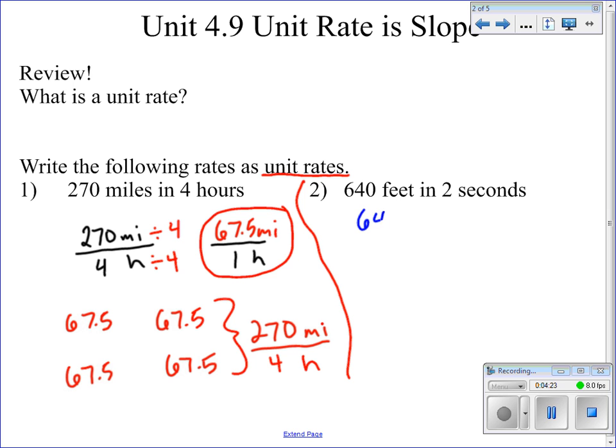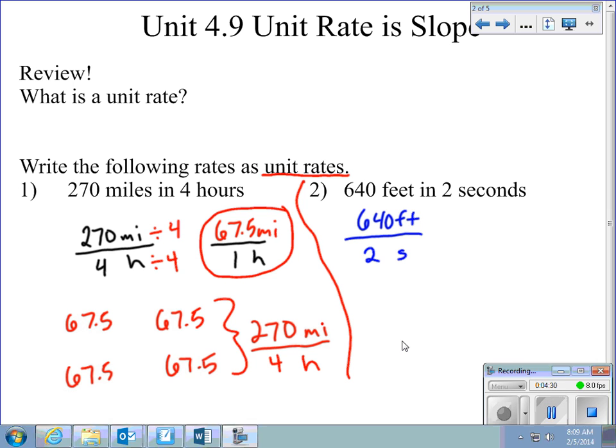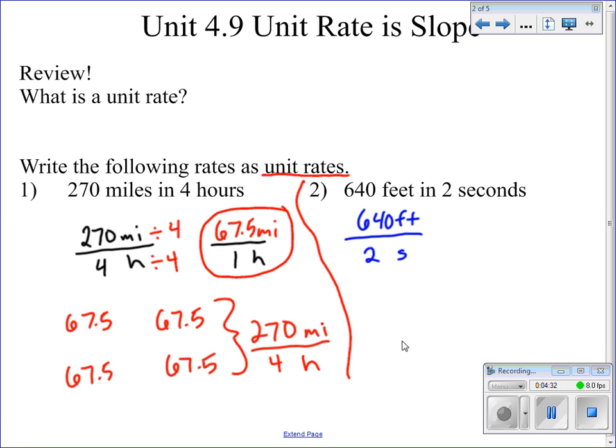Looking at the next example, 640 feet in two seconds. We want to know now how many feet are being traveled in one second. Well, the way we do that is we're going to divide by two because there are two groups here. We need to cut those two groups so that we're only looking at one. So 640 divided by 2 would give us 320 feet per second.